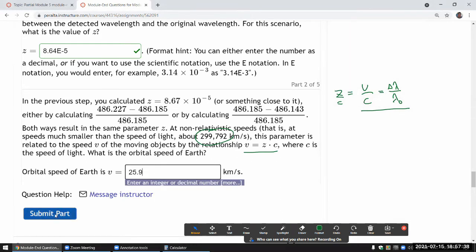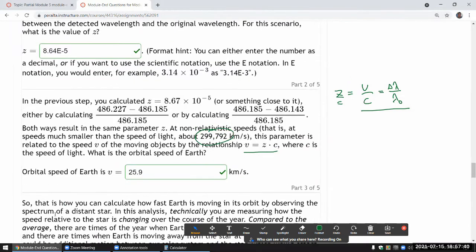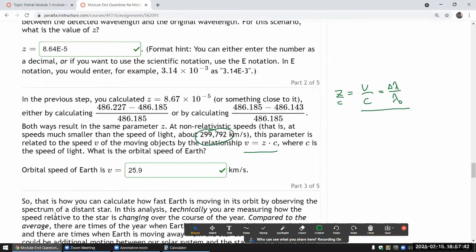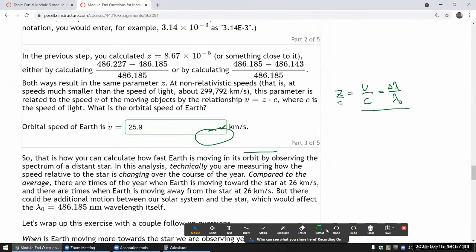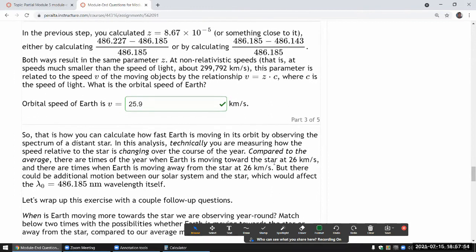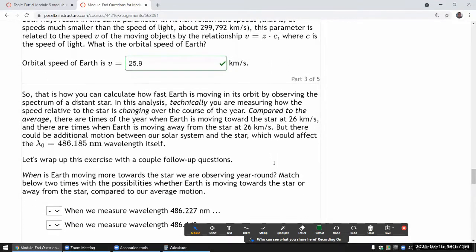So we get 25.9 kilometers per second. Kilometers per second. Oh, I guess that's actually pretty fast. Because 25 meters per second would be like 50 miles per hour. So that's 1,000 times 50 miles per hour. Yeah. So that is how you can calculate how fast Earth is moving in its orbit by observing the spectrum of the distant star.